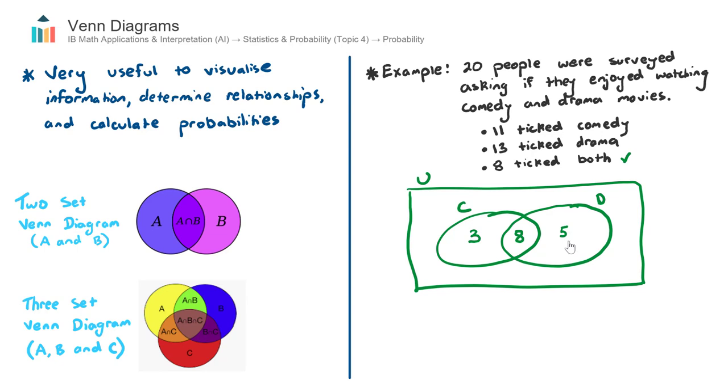We're not quite finished yet because we know that in total 20 people were surveyed. And so far, we have counted 3 plus 8 plus 5, which is 16. So 4 people who were surveyed actually don't like watching either comedy or drama. And we put those somewhere outside the sets. I tend to like to put them on the bottom left. So 4 people here didn't tick either comedy or drama.